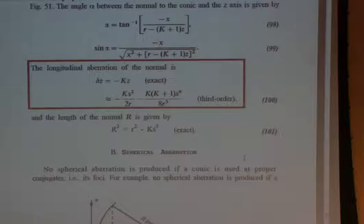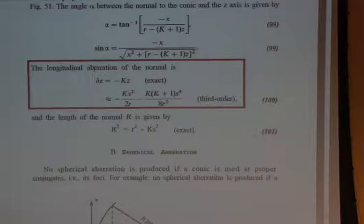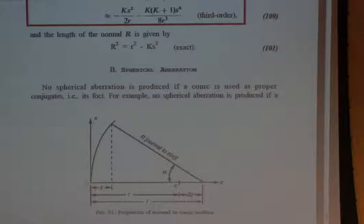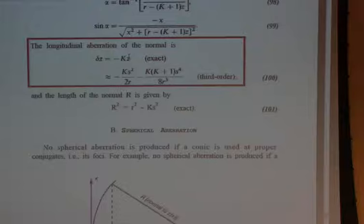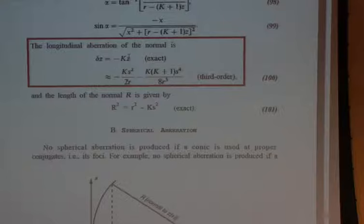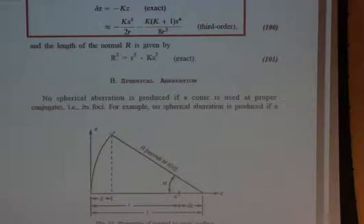The longitudinal aberration of the normal to the surface: if we take a conic and draw a normal to the surface, where the center of curvature is for the vertex, the normal comes back at some location delta Z away. There's an exact expression: delta Z equals minus the conic constant times Z. For a parabola, K equals minus 1, so delta Z equals Z — the distance here is exactly equal to the distance back. For other conics, it's minus K times Z.